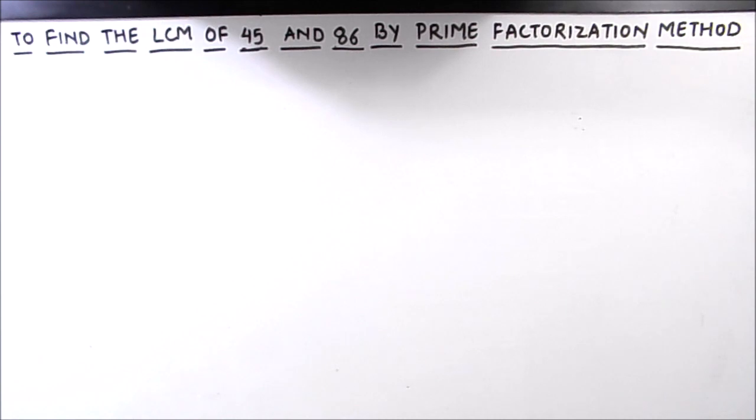In this method we divide the numbers by prime numbers and find the factors of this number, and by taking the product of the factors we can find the least common multiple of the two numbers.